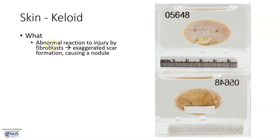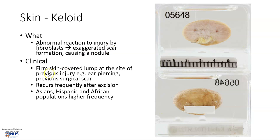A keloid is essentially an abnormal reaction to injury by fibroblasts in the skin or in the dermis. This gives rise to a very exaggerated scar, causing a nodule. Clinically, the patient will notice a firm, skin-covered lump at the site of previous injury. And this injury may be quite trivial — for example, an ear piercing.